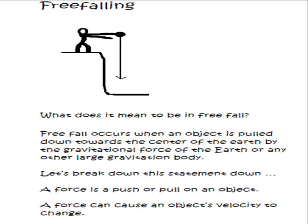So let's talk real quickly about what free fall actually means. Free fall occurs when an object is pulled down towards the center of the Earth by the gravitational force of the Earth or any other large gravitational body. Let's break this down. A force is just a push or a pull on an object, and a force can cause an object's velocity to change. Gravity is a force that causes any object with mass to fall down.